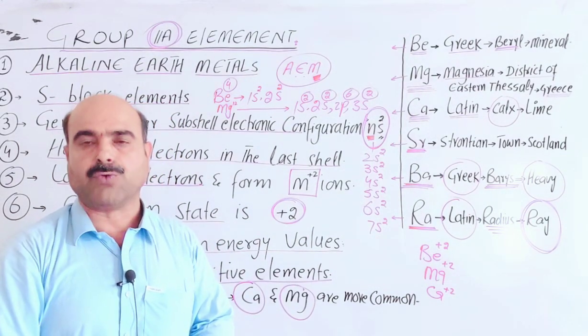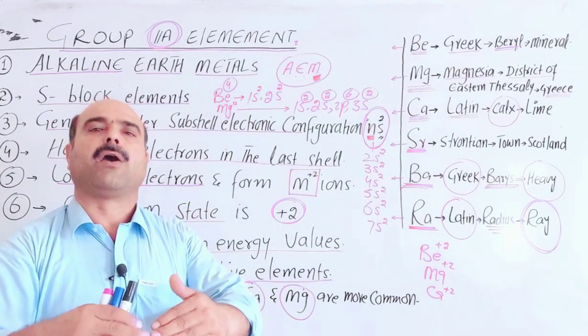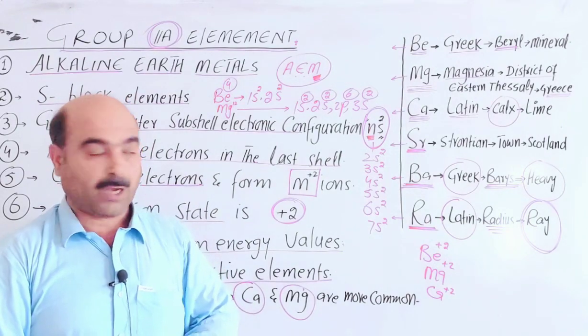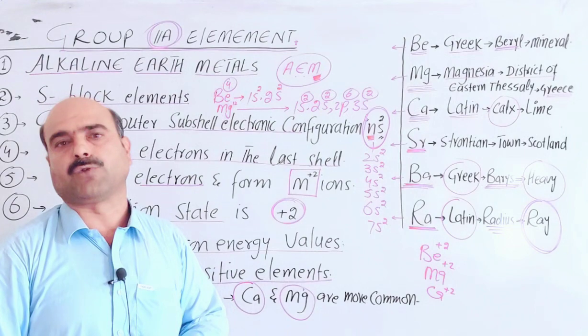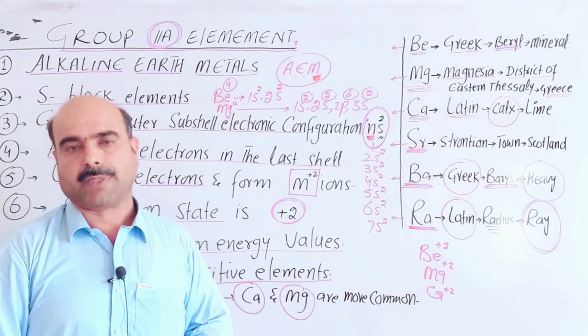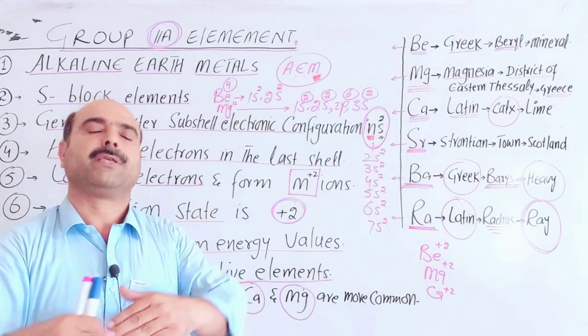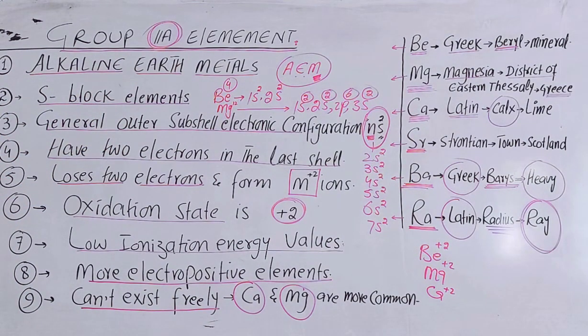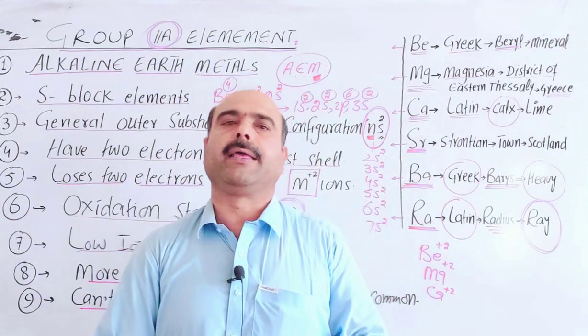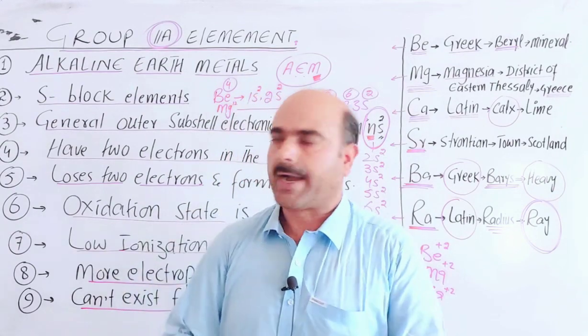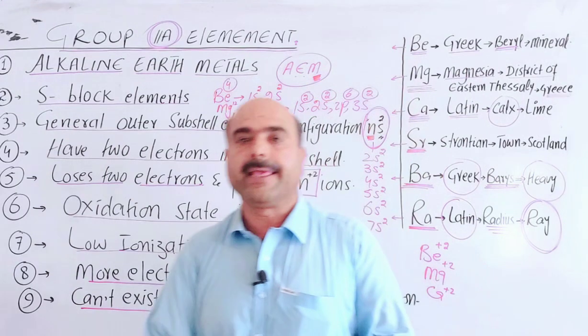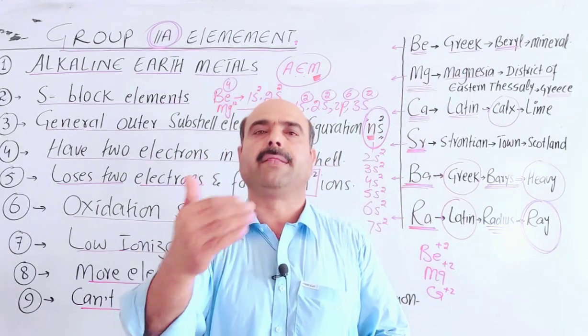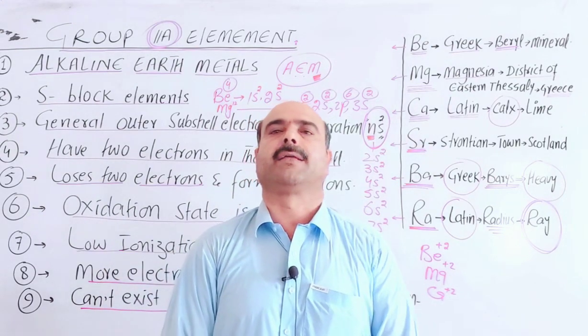They lose electrons and form positive charges. They can also gain electrons like group 6A and 7A elements, forming salts and ionic compounds through complete transfer of electrons from one atom to another. These are all about the group second A elements in periodic table - the general introduction. Next topic will be occurrence of alkaline earth metals. They can't exist freely, so they occur in ores and minerals.